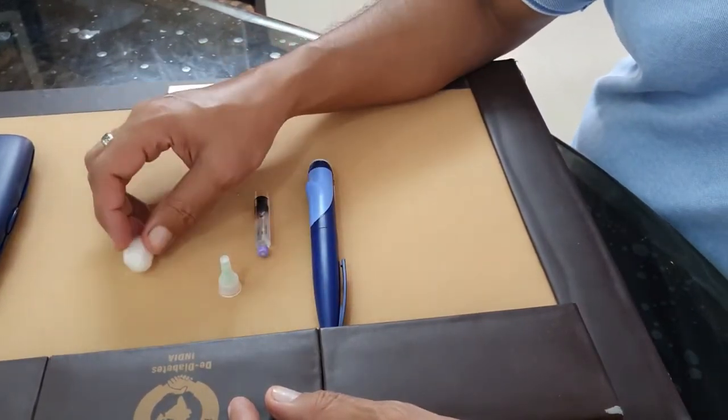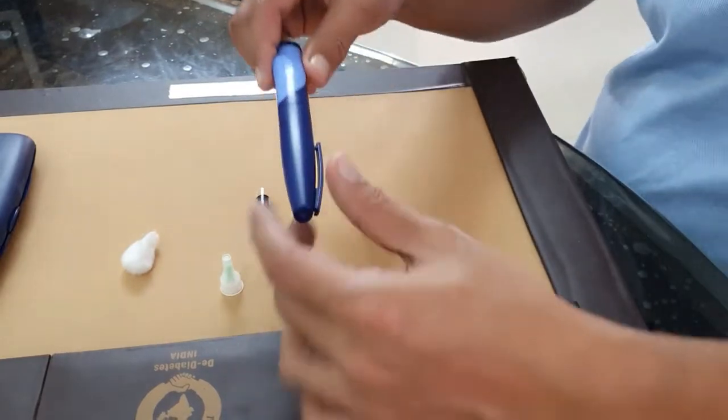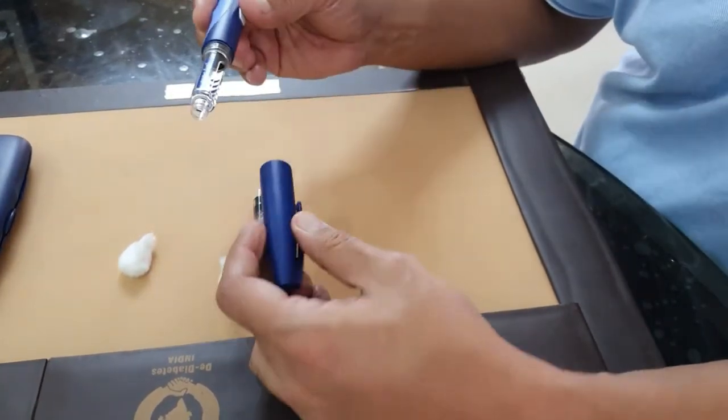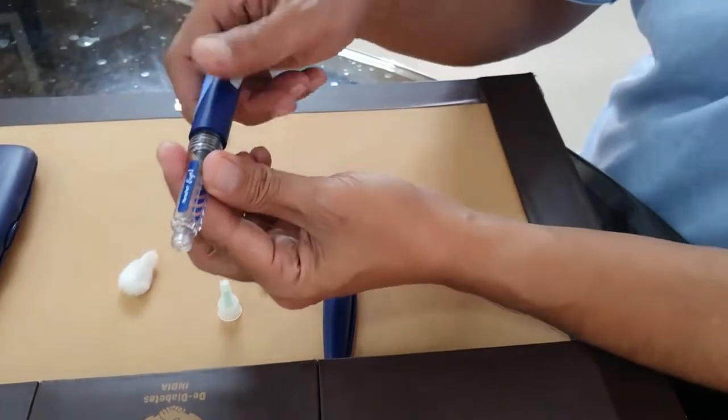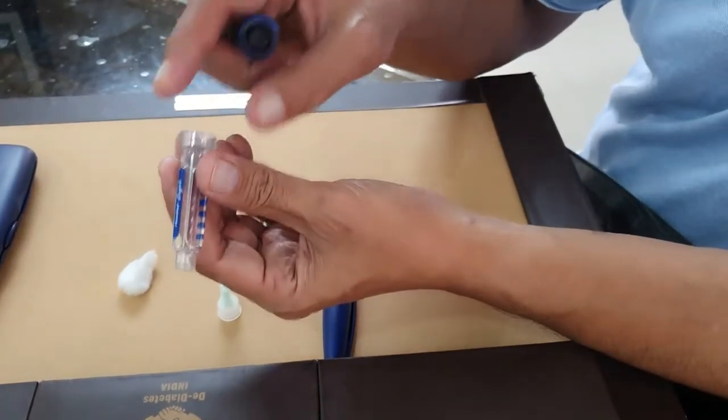Once you get the pen it will look like this. It has a cap and a cartridge box you can remove like this. This is the area where you're going to put the cartridge.